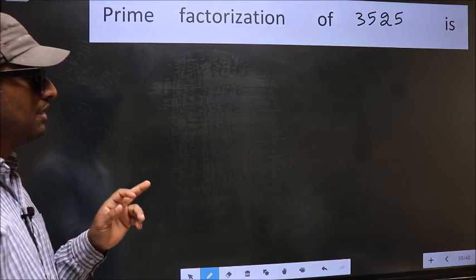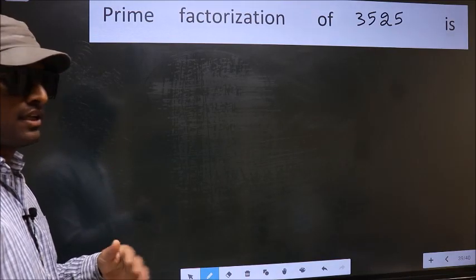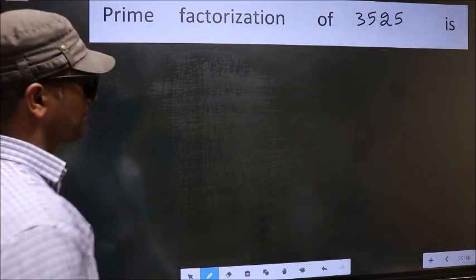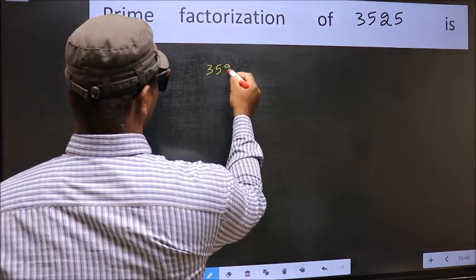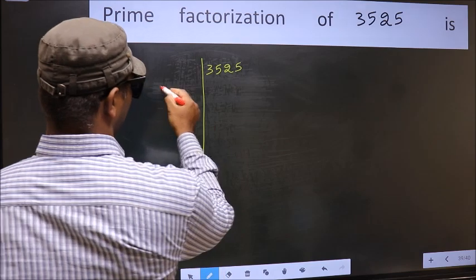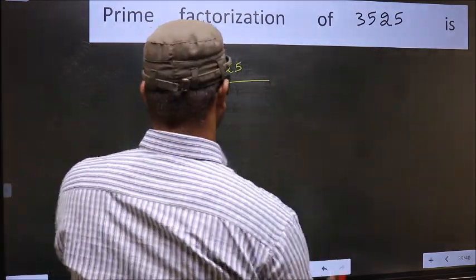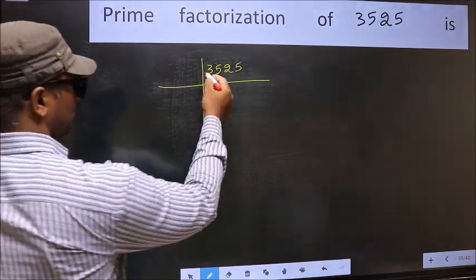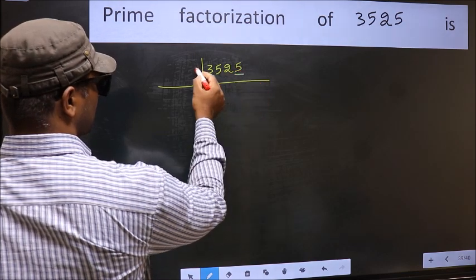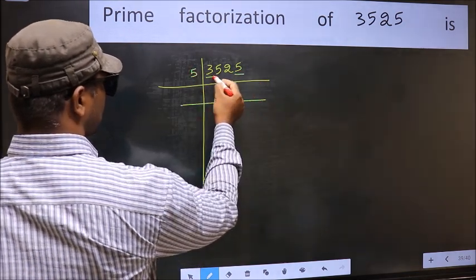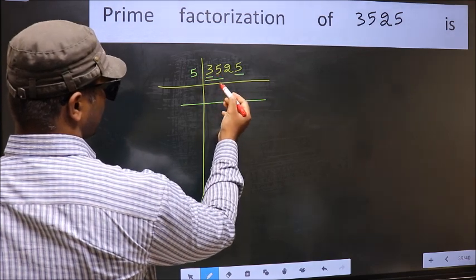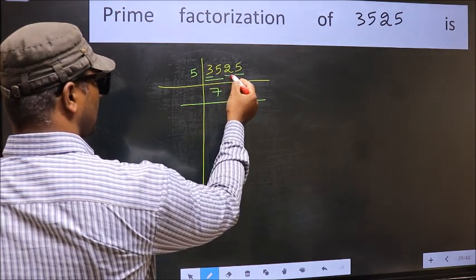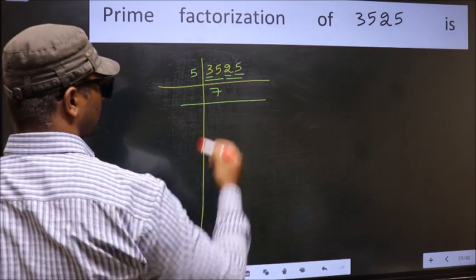Prime factorization of 3525. To do prime factorization, first we should frame it in this way. This is step 1. In this number, the last digit is 5, so take 5. The first number is 3, which is smaller than 5, so take 2 numbers: 35. When do we get 35 in the 5 table? 5 times 7 is 35. The other number is 2, smaller than 5, so take 2 numbers: 25.